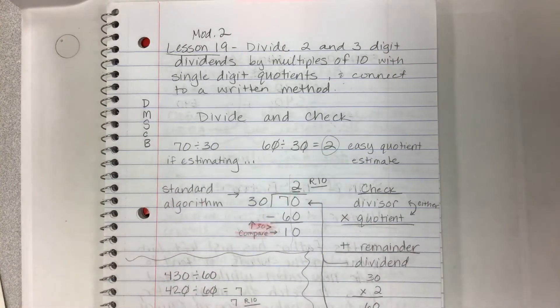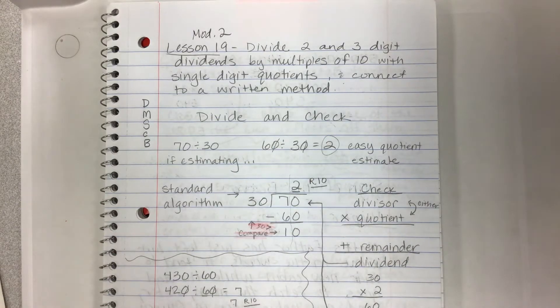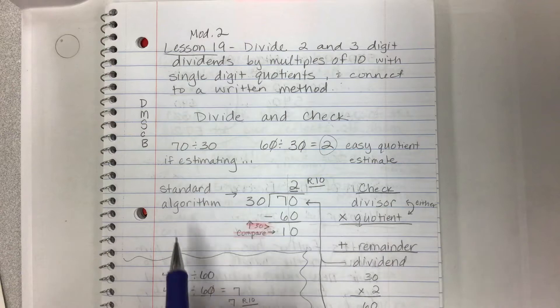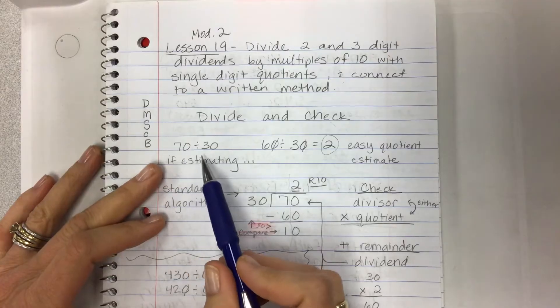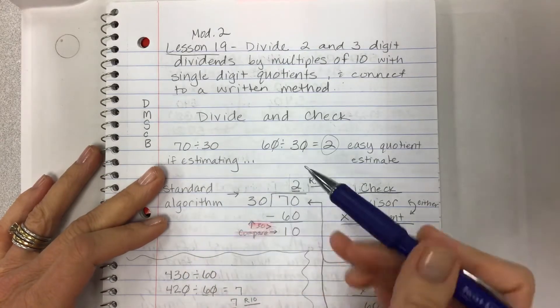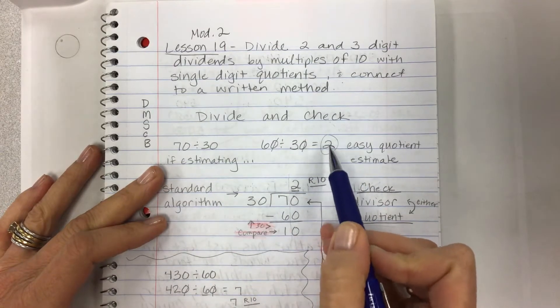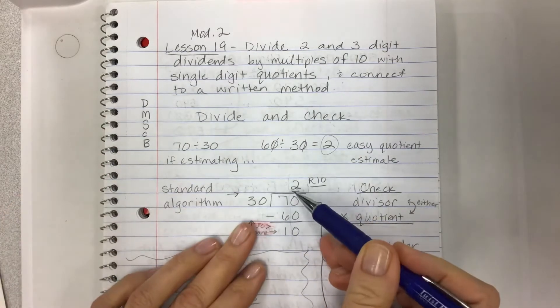Bring down, so we're going to make sense of all this stuff that we've been doing in the previous few lessons about why are we estimating, why do I round the divisor first, why do I estimate something, and it's always to help you figure out what goes in the quotient. So we're going to use the standard algorithm today. For example, if I had 70 divided by 30, if I was going to estimate, I would say 30 could fit into 70 approximately two times. The reason we do this step is to help us get the two that goes in the quotient up here.